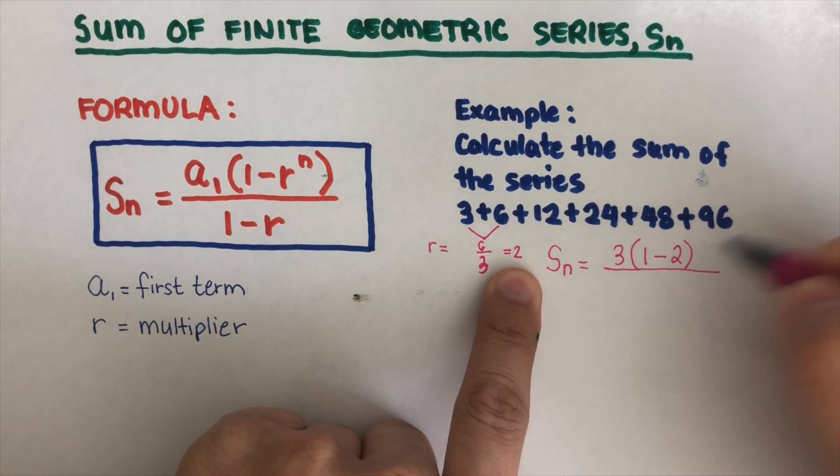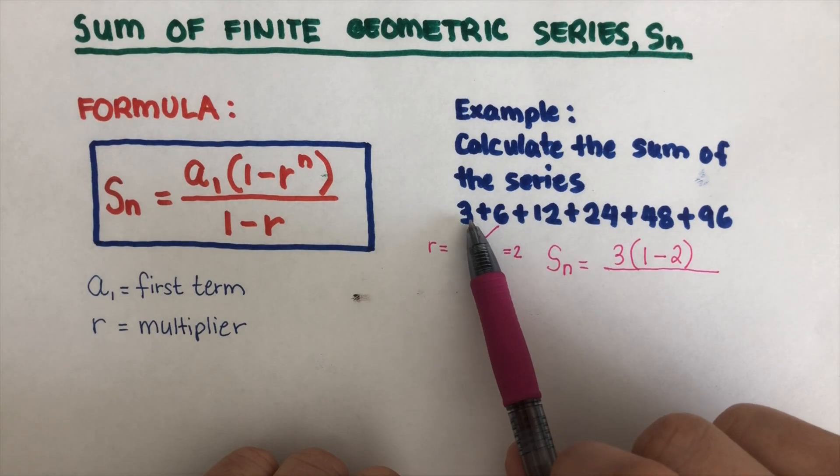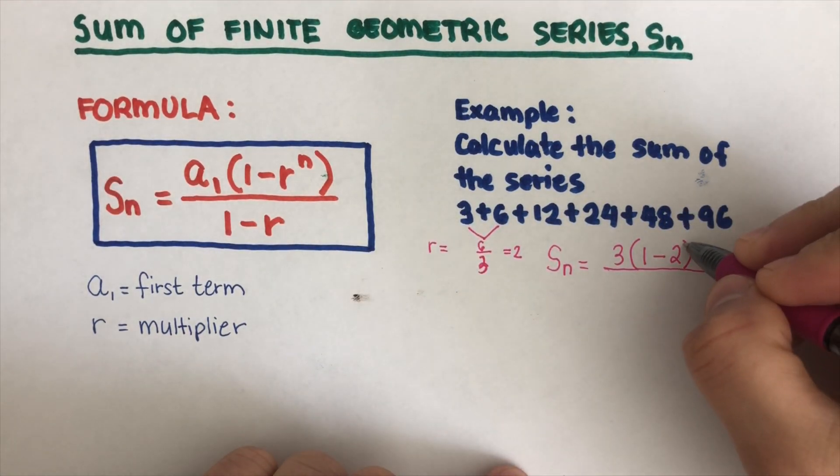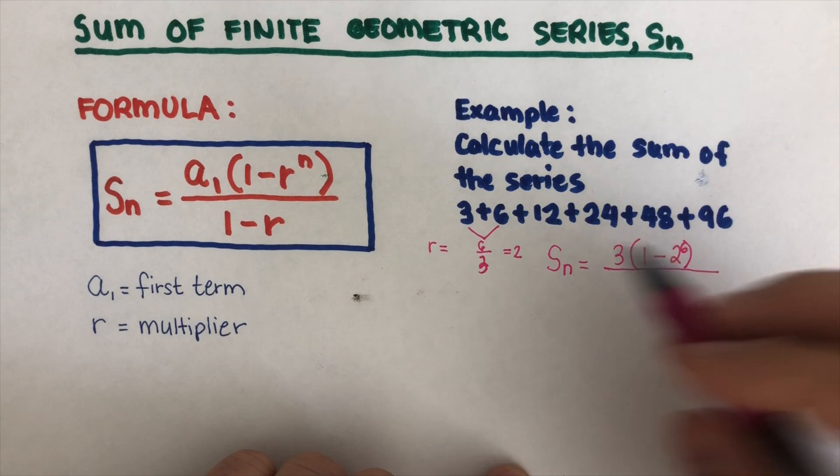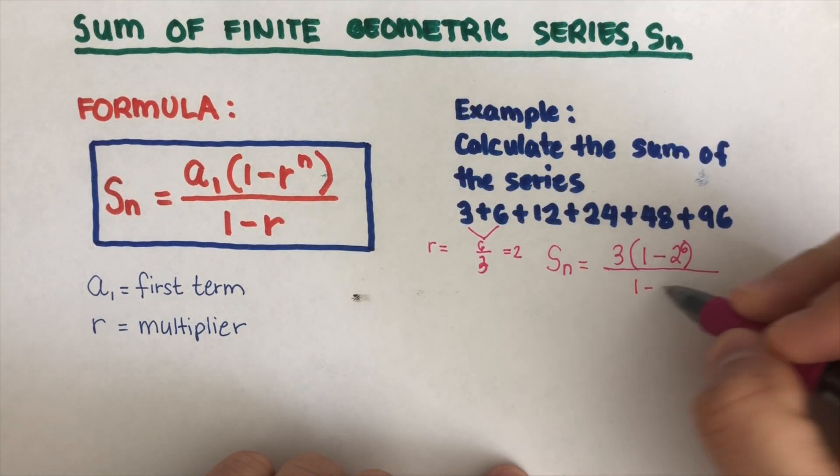And that's to the power n is, we count everything: 1, 2, 3, 4, 5, 6. That's 2 to the power 6. And then 1 minus 2. So then we go ahead and do the math here.